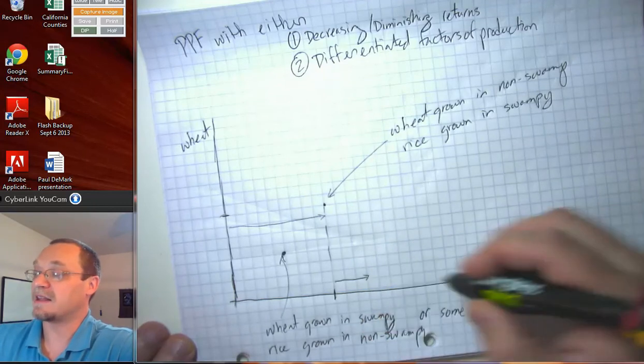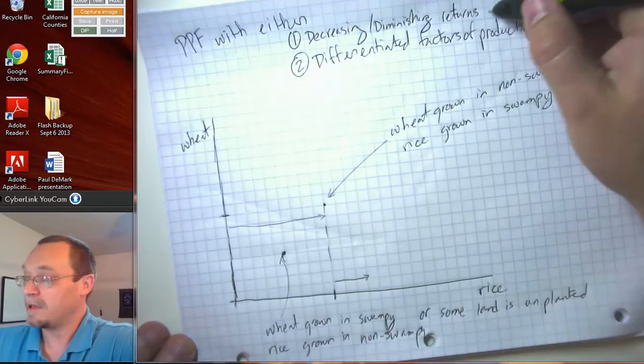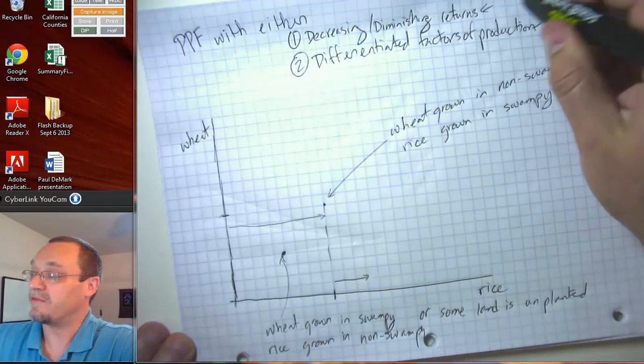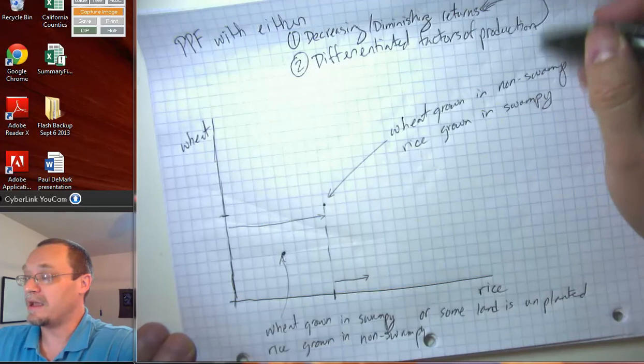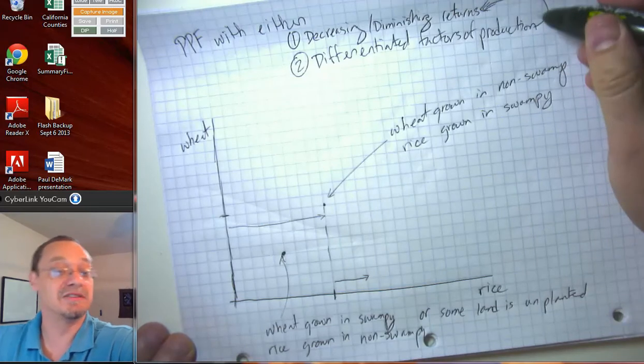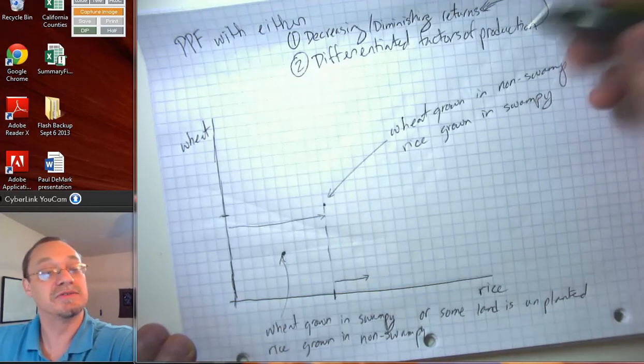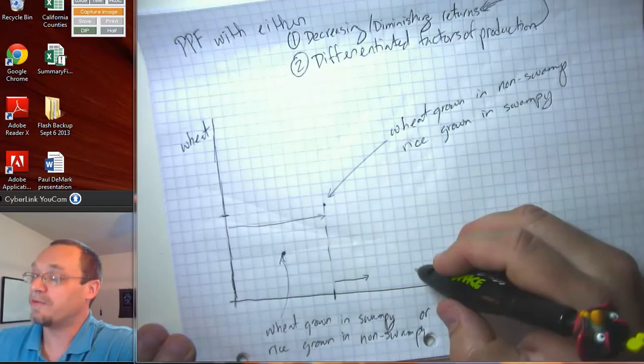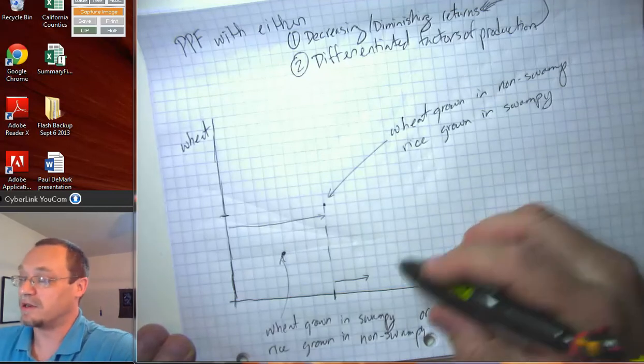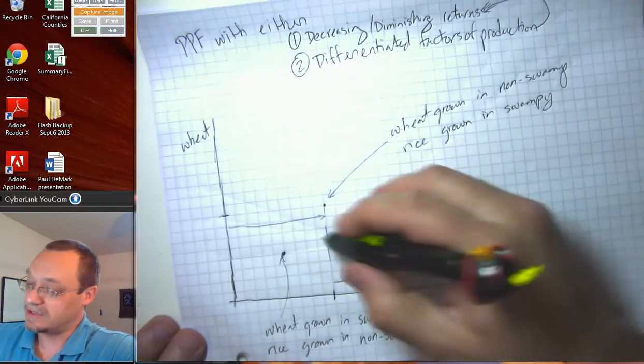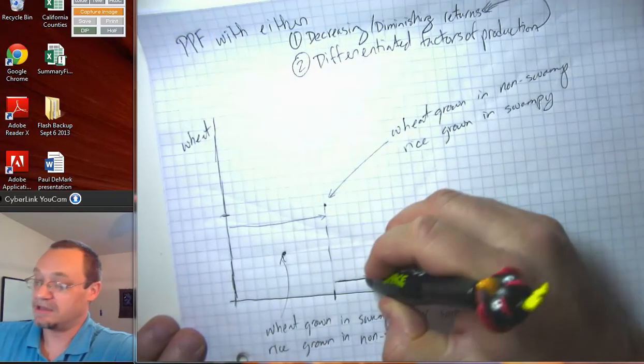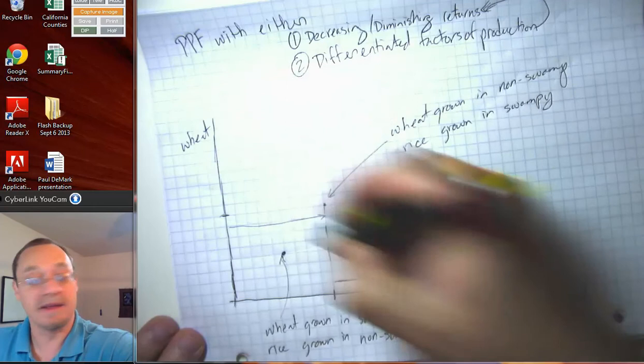And that's exactly one of the reasons why differentiated factors of production, the land is a factor of production and it's differentiated. Some land is better for some purposes than others. Why differentiated factors of production are going to lead to decreasing returns. And you can see that this arrow here is smaller than that arrow. That's the idea of diminishing returns.